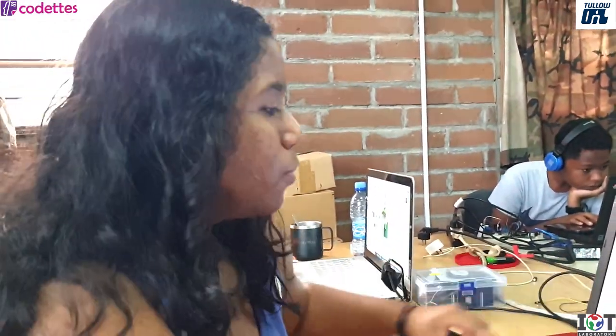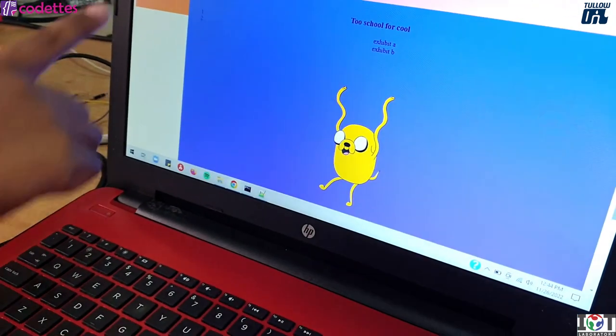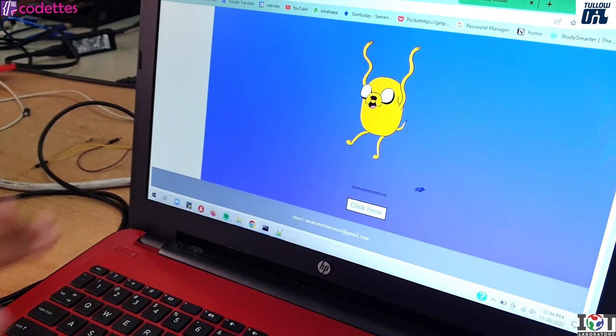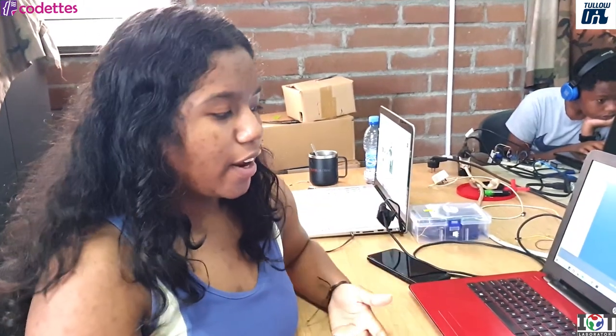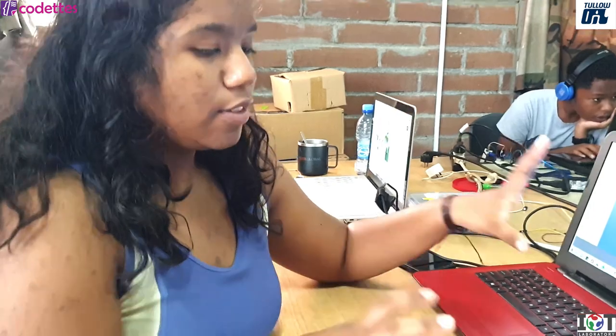And this is the navigation bar with some links, and at the bottom, I have a footer with my information. And I also have a little button here so that I could use that, for example, for my LED. And so my next step is to make these two communicate.